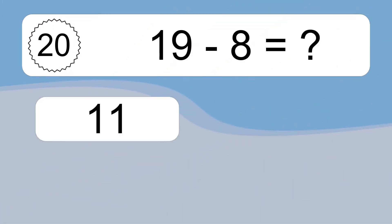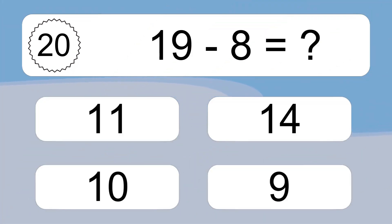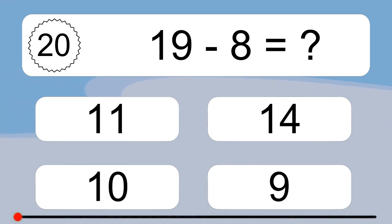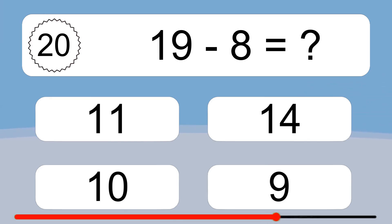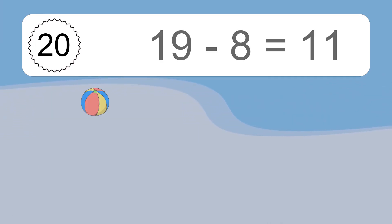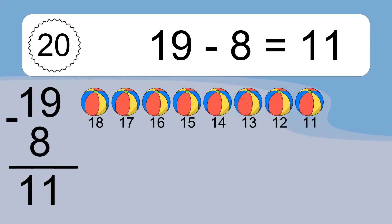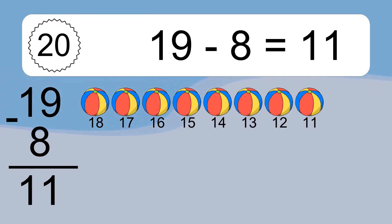19 minus 8 equals what? 19 minus 8 equals 11. Let's count it: 18, 17, 16, 15, 14, 13, 12, 11.